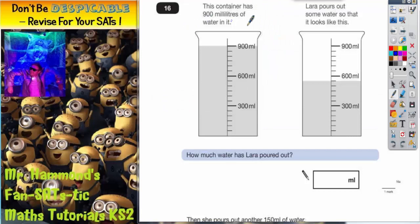Question 16. This container has 900 milliliters of water in it. Laura pours out some water so that it looks like this. You can see the water level's dropped. How much water did she pour out?